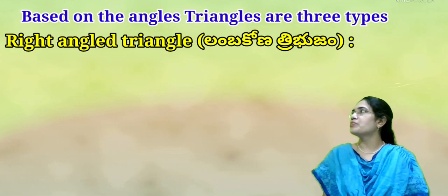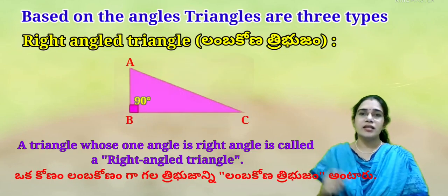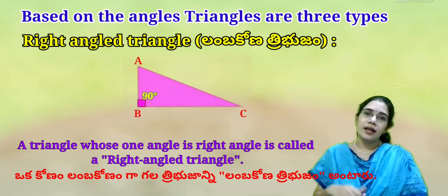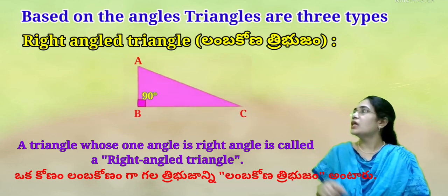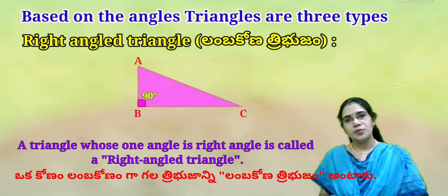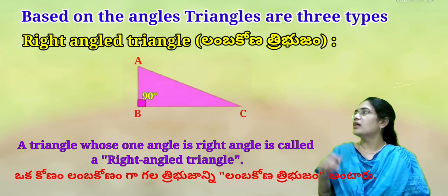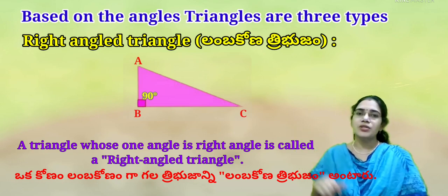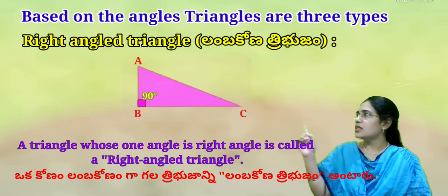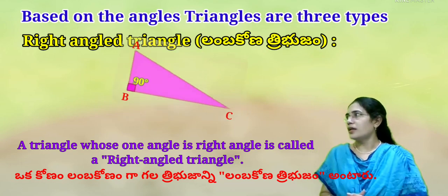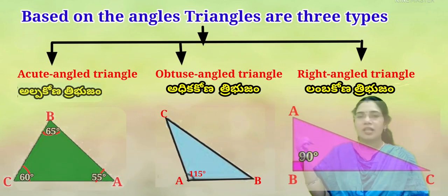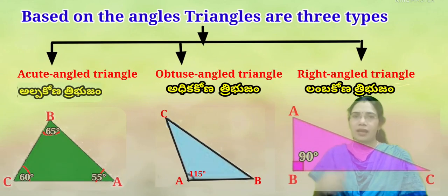Next is the right angle triangle. A triangle whose one angle is a right angle is called a right angle triangle (Lamba Kona Thribujamu). Here, Angle B equals 90 degrees — that is a right angle — so this is a right angle triangle. Like these, we have three types of triangles based on angles.